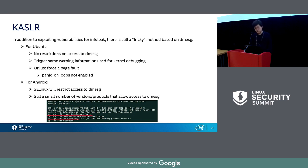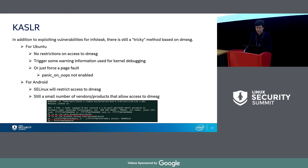We can trigger warning information or force a page fault because panic_on_oops is not enabled in Ubuntu. For Android, SELinux restricts access to dmesg, but there are still a small number of vendors or products that allow access. In addition to this, we can also use hardware side-channel timing attack methods to bypass KASLR.